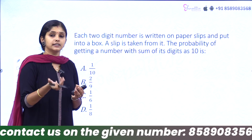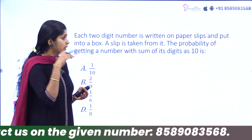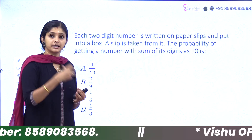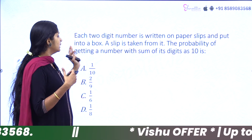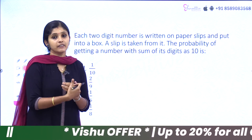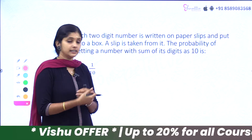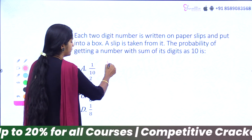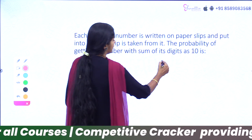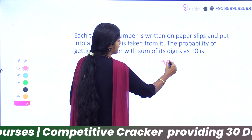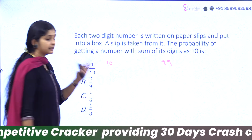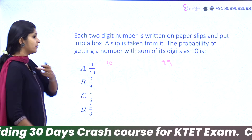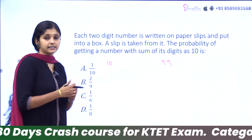We are dealing with two-digit numbers. We have 10 to 99, which gives 90 numbers total. We need to find how many of those have digits summing to 10.